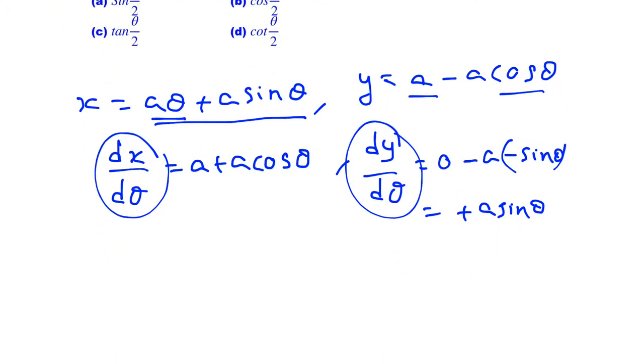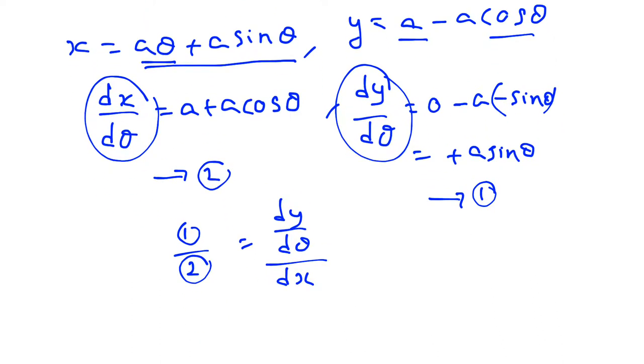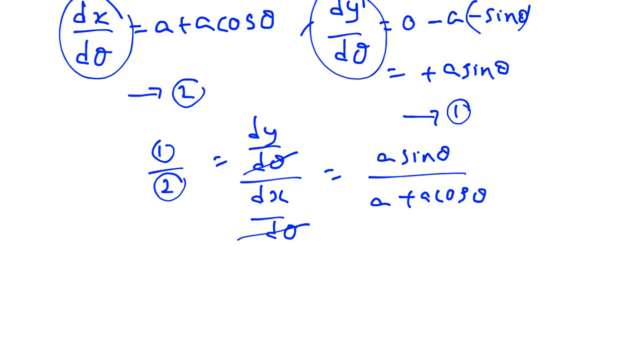Now dividing equation 2 by equation 1, dy/dx equals (a sin θ)/(a + a cos θ). Taking 'a' common and canceling, dy/dx equals sin θ/(1 + cos θ).